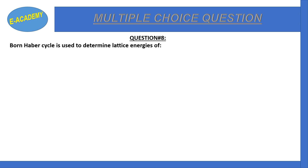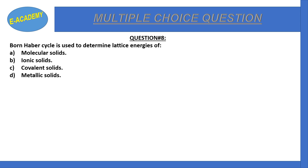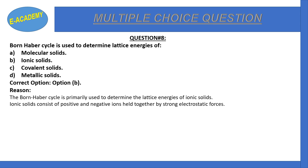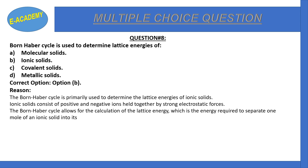Question number eight: The Born-Haber cycle is used to determine lattice energies of — molecular solids, ionic solids, covalent solids, or metallic solids? The correct option is B: ionic solids. The Born-Haber cycle is primarily used to determine the lattice energies of ionic solids, which consist of positive and negative ions held together by strong electrostatic forces. Lattice energy is the energy required to separate one mole of the ionic solid into its constituent ions in the gas phase.